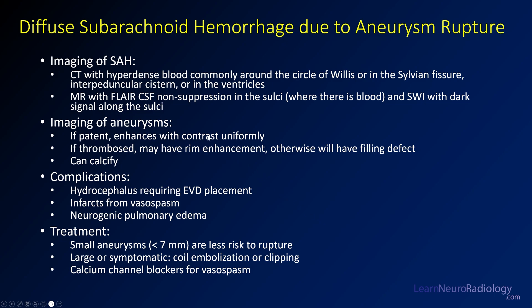When imaging aneurysms, if they're thrombosed, they may have a filling defect or may not fill, and you might see calcification along the walls. After aneurysm rupture and subarachnoid hemorrhage, you can get hydrocephalus, vasospasm, and neurogenic pulmonary edema. Aneurysms that are larger are more likely to rupture. If they're large or symptomatic, we treat them — like coil embolization in this case, or they can be surgically clipped. We use calcium channel blockers to treat vasospasm, and a lot of our patients stay in the ICU to be followed up for possible vasospasm.